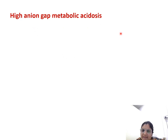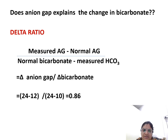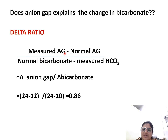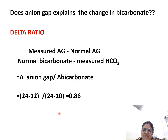Since it is a high anion gap metabolic acidosis, we now check whether the anion gap explains the change in bicarbonate by calculating the delta ratio. The delta ratio is: (measured anion gap minus normal anion gap) divided by (normal bicarbonate minus measured bicarbonate). In this case, delta anion gap divided by delta bicarbonate is approximately 0.86.